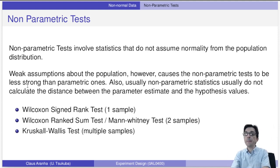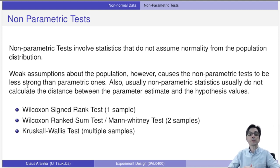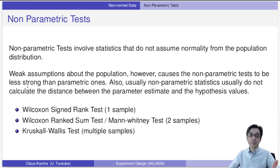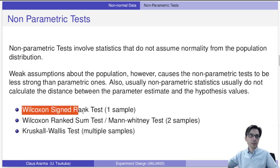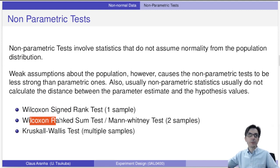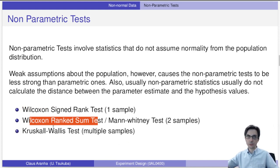Non-parametric tests involve statistics that do not assume normality for the population — they assume very little about the population, making them very useful. The trade-off is that non-parametric tests are usually less powerful than parametric tests because they make fewer assumptions. We have the Wilcoxon signed-rank test for one sample, the Wilcoxon rank-sum test or Mann-Whitney test for two samples, and the Kruskal-Wallis test for multiple samples.